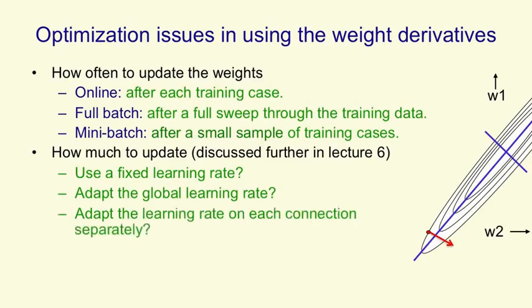We might even have a separate learning rate for each connection in the network, so that some weights learn rapidly and other weights learn more slowly. Or we might go even further and say we don't really want to go in the direction of steepest descent at all.